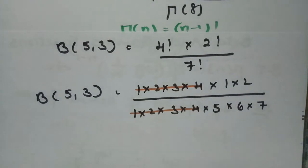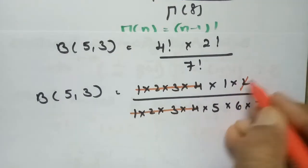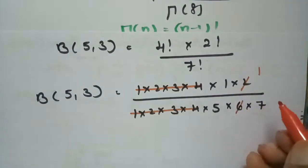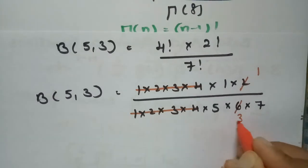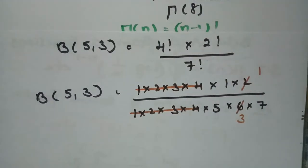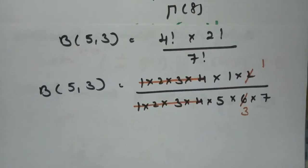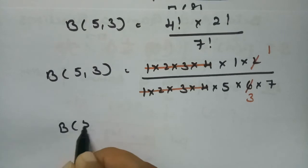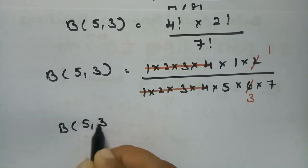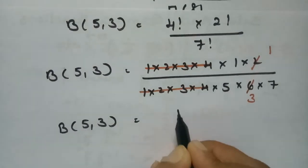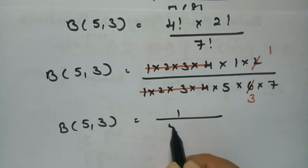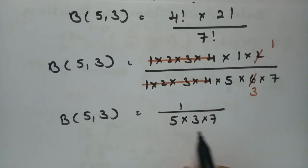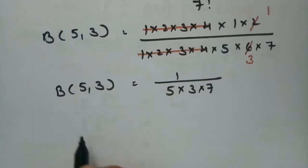Canceling 1, 2, 3, 4 from the numerator and denominator, and simplifying further, we get 2 ones and 2 threes canceling. Therefore beta of 5 comma 3 is nothing but 1 divided by 5 into 3 into 7, which gives 1 over 105.